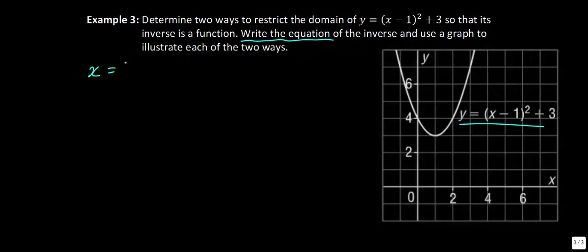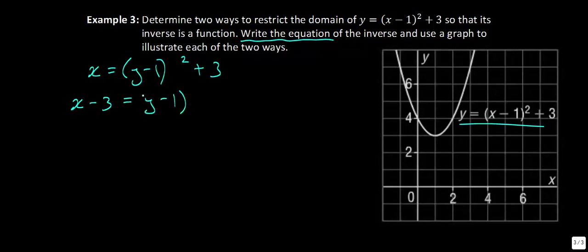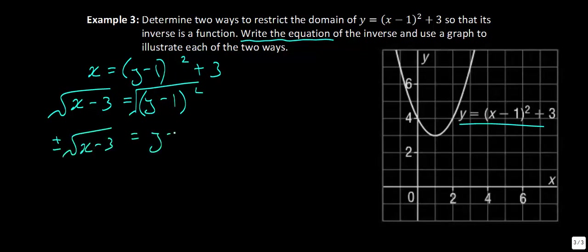Let's write the inverse equation first. Switching variables gives x equals (y minus 1) squared plus 3. Rearranging for y: x minus 3 equals (y minus 1) squared. Taking the square root of both sides — don't forget plus or minus — gives plus or minus the square root of (x minus 3). Then isolating y by adding 1 gives y equals 1 plus or minus the square root of x minus 3.